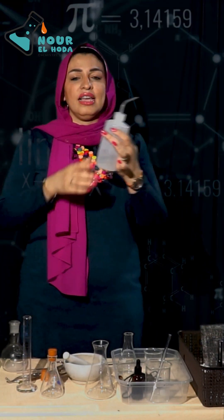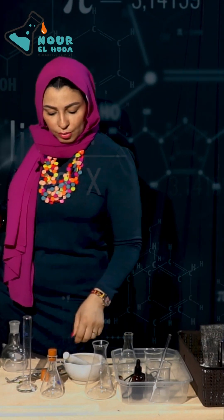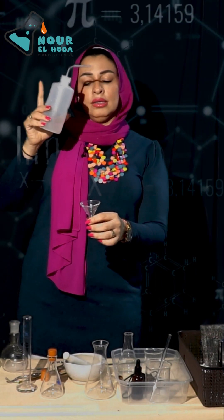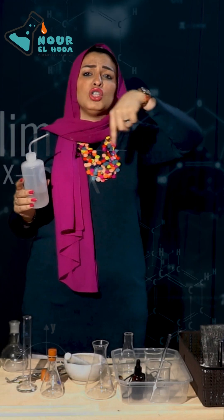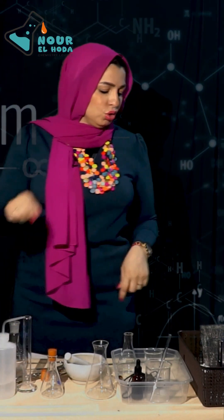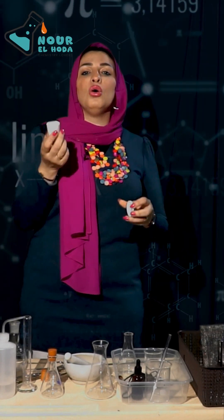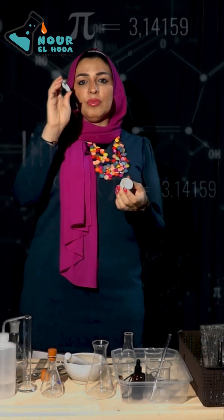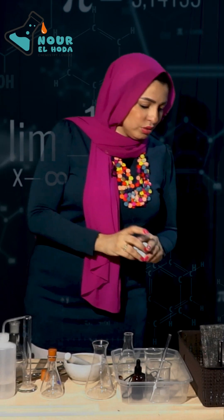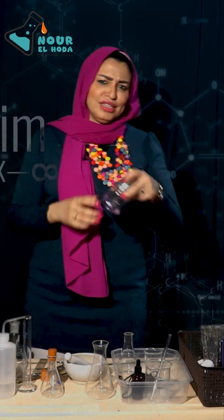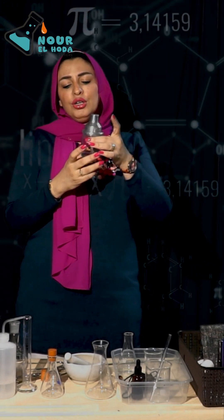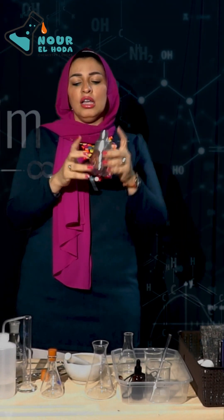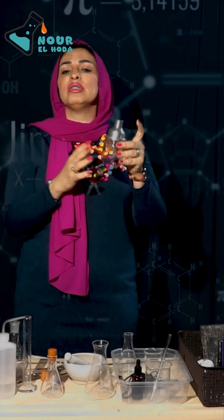A washing bottle is used to rinse or wash out a salt when preparing it. A crucible is used for burning or heating a substance when you need a container with a lid or cover. A spirit burner is an alternative to a Bunsen burner — it uses alcohol as fuel.